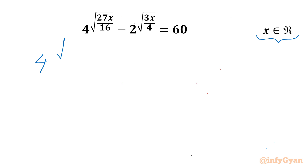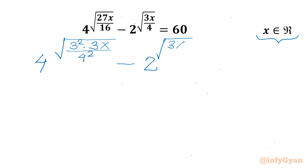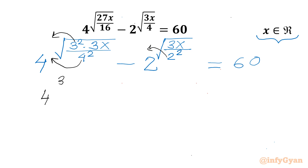I will be rewriting our exponent 27 as 9 times 3, where 9 can be written as 3 squared. The denominator 16 is the square of 4. So we have 4 raised to the power square root of 3 squared times 3x over 4 squared, minus 2 raised to the power square root of 3x over 4 squared, equal to 60. Now I will take all perfect square factors outside the square root sign using their base numbers, so the 2 from denominator 4 comes out, giving 4 raised to the power 3 over 4 times square root 3x, minus 2 raised to the power 1 over 2 times square root 3x, equal to 60.